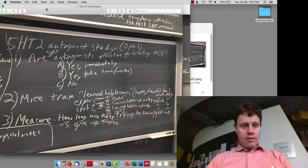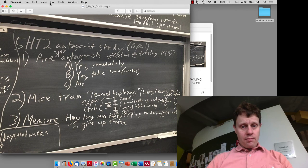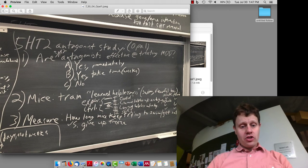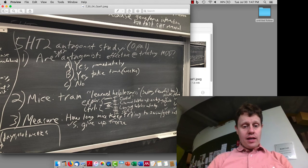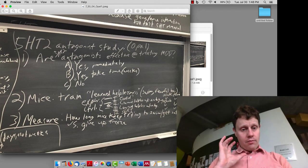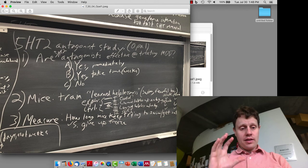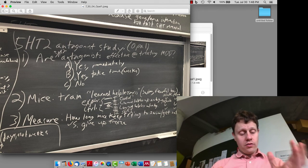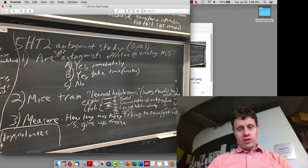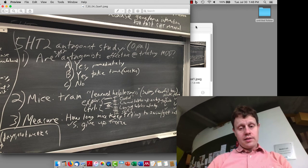And then we talked about the OPAL study, where they looked at serotonin receptor antagonists, specifically 5-HT2 antagonists. In this, they were mainly comparing 5-HT2 antagonists in mice that had learned helplessness versus learned helplessness mice without 5-HT2.